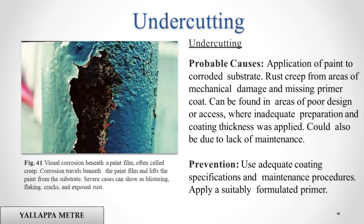Undercutting. Probable causes: application of paint to corroded substrate. Rust creep from areas of mechanical damage and missing primer coat. Can be found in areas of poor design or access, where inadequate preparation and coating thickness was applied. Could also be due to lack of maintenance. Prevention: use adequate coating specifications and maintenance procedures. Apply a suitably formulated primer.